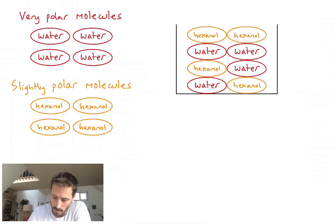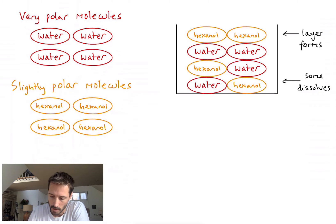You can see some of the hexanol has dissolved in the water towards the bottom. However, because they are not very similar in terms of their intermolecular forces, we might also notice that a bit of a layer has formed on top. In this case, hexanol. So if they are somewhat similar intermolecular forces, they might dissolve a bit but not completely.